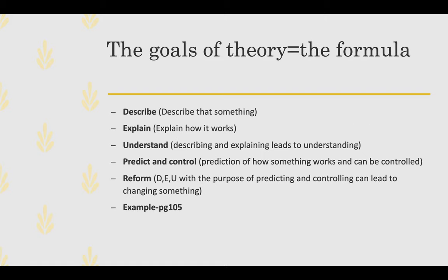The goals of theory are: to describe or explain how something works; to understand, which follows from describing and explaining; to predict and control how something works; and to do reformation — describing, explaining, and understanding with the purpose of predicting and controlling, leading to overall change. Applying this to the textbook example on page 105, the 'something' is the media's portrayal of race. Theory can describe how the media report race, explain why they do so, lead to an understanding of why that reporting can be predicted and controlled, and suggest ways of reforming how the media reports on race.